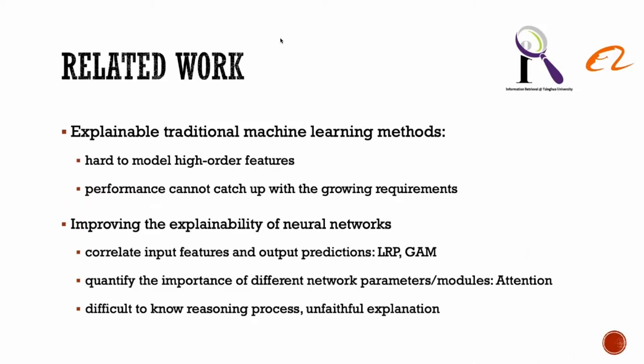Many traditional non-neural machine learning methods are interpretable, but their performance cannot catch up with growing requirements. Some researchers design techniques like layer-wise relevance propagation (LRP) to recover relevance between output and input features, but these post-hoc techniques do not improve the intransparency nature of neural networks. Techniques like attention networks cannot completely recover how the model makes predictions.